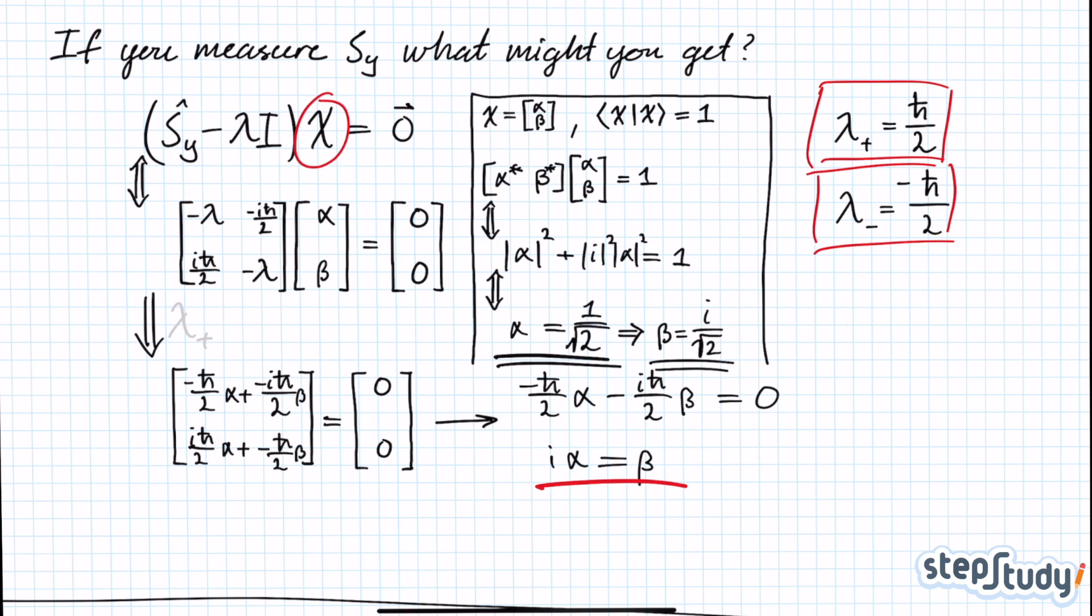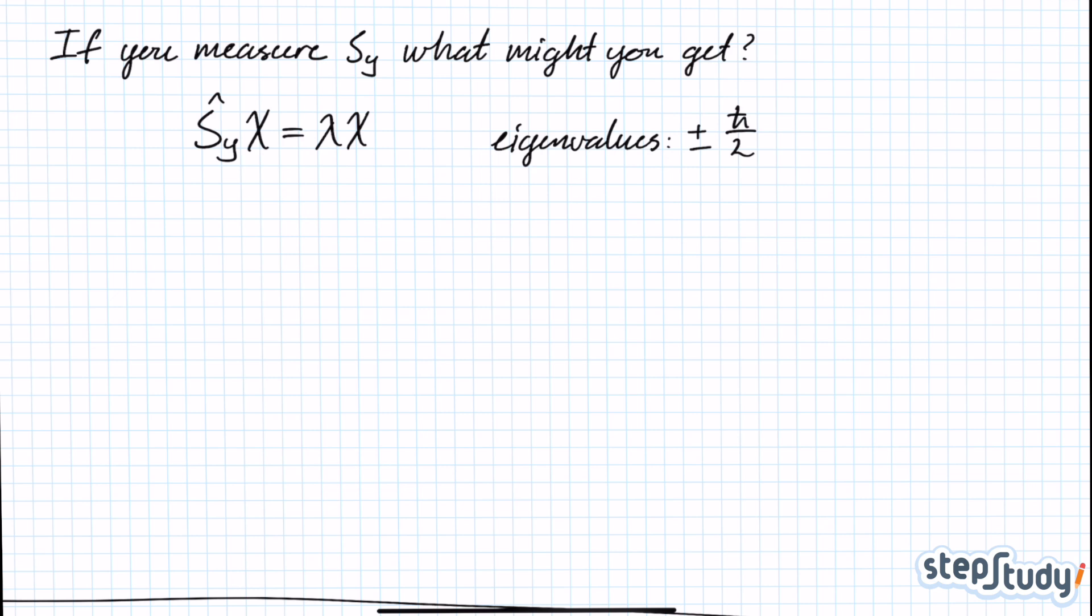So we now have the eigenstate that we call spin up in the y direction. To find the spin down in the y direction, you'll just need to use the lambda minus eigenvalue and do the same thing. I can tell you now that it's exactly the same as the spin up state, except for the fact that it's complex conjugated. So the beta component in that would just be minus i over the square root of 2.